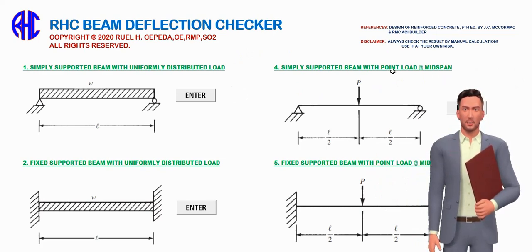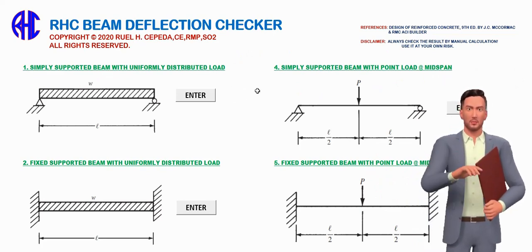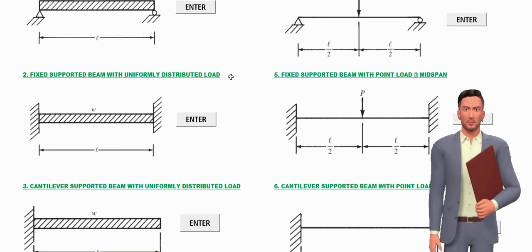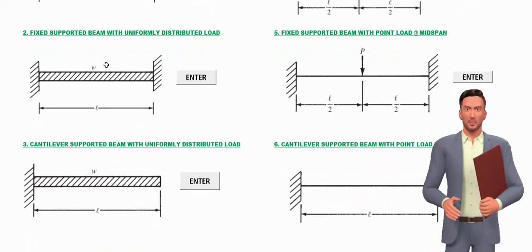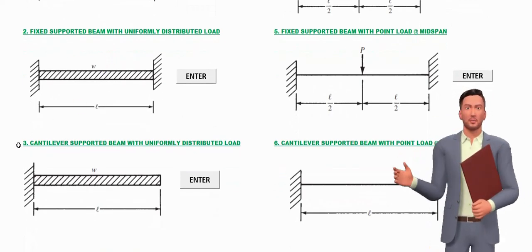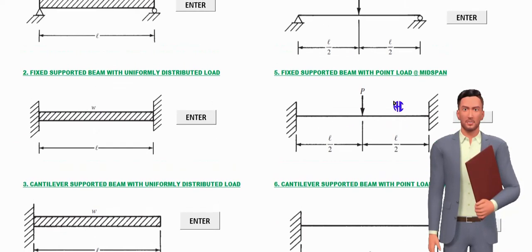The RHC beam deflection checker includes simply supported beam with uniformly distributed load, fixed supported beam with uniformly distributed load, and cantilever supported beam with uniformly distributed load.